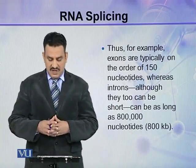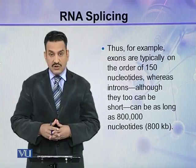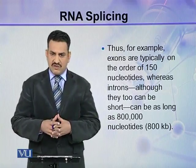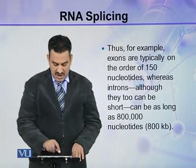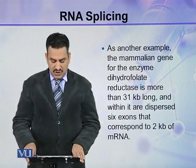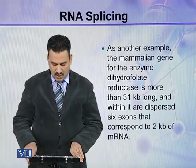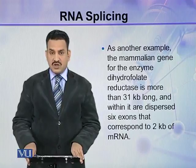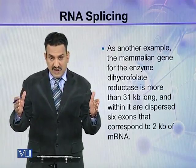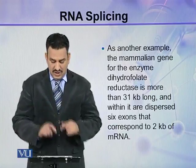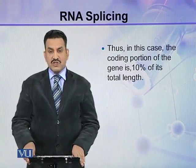For example, exons are typically on the order of 150 nucleotides, whereas introns, although they too can be short — 150 nucleotides or even shorter — can be as long as 800,000 nucleotides or 800 KB. As another example, the mammalian gene for the enzyme dihydrofolate reductase is more than 31 KB long, and within it are dispersed 6 exons that correspond to only 2 KB of the mRNA. So the gene is 31 KB but the actual mRNA is only 2 KB — the coding portion is 10% or less of the total gene length.